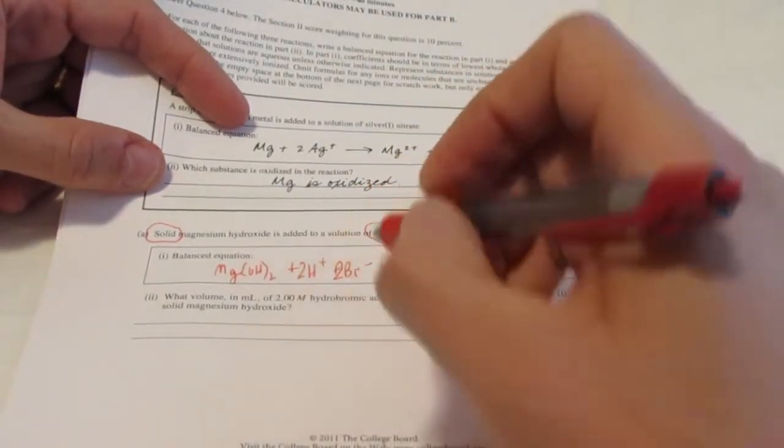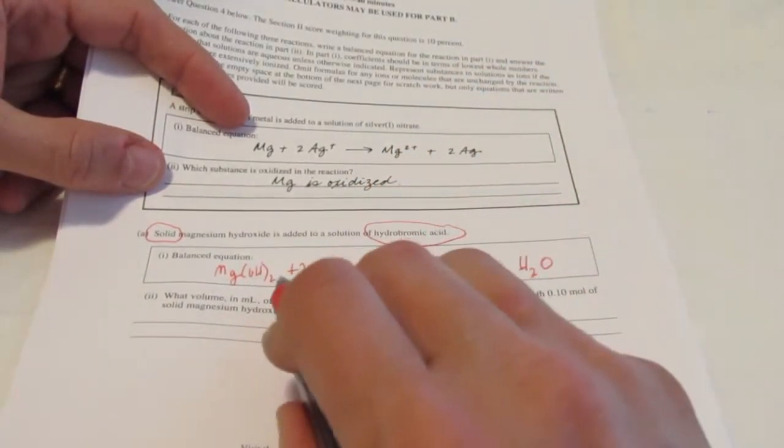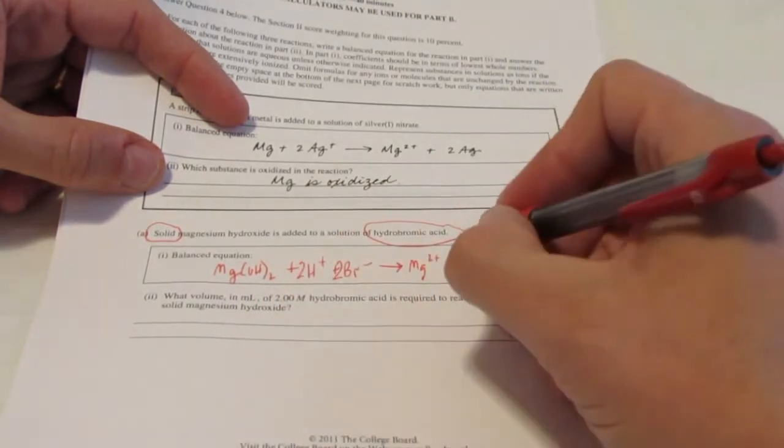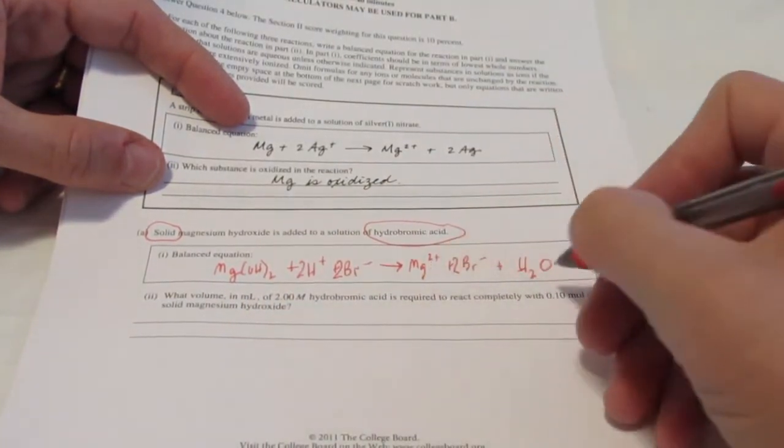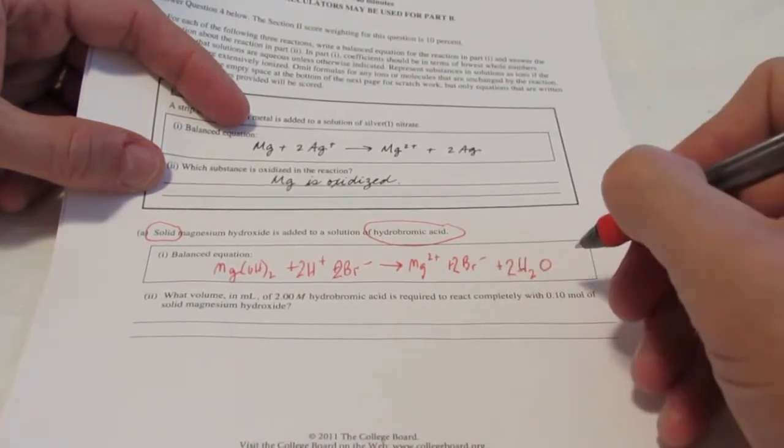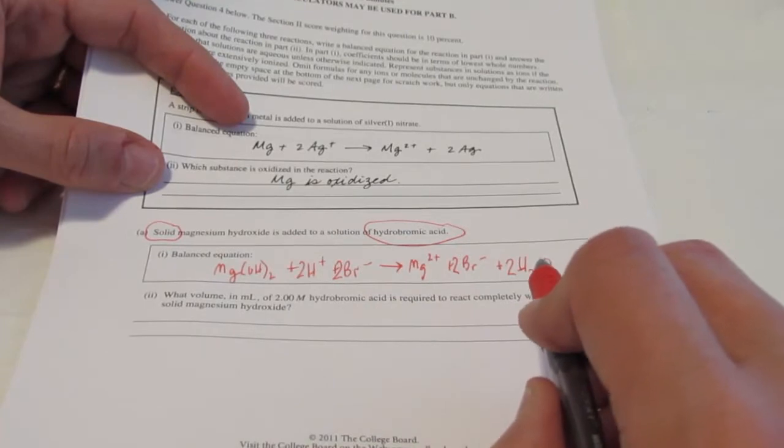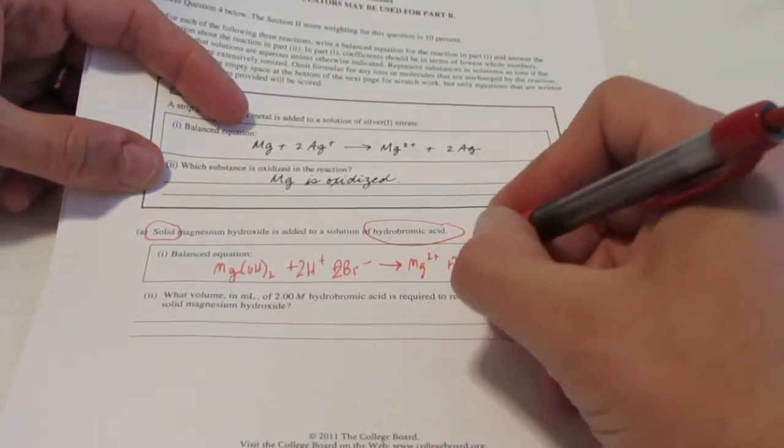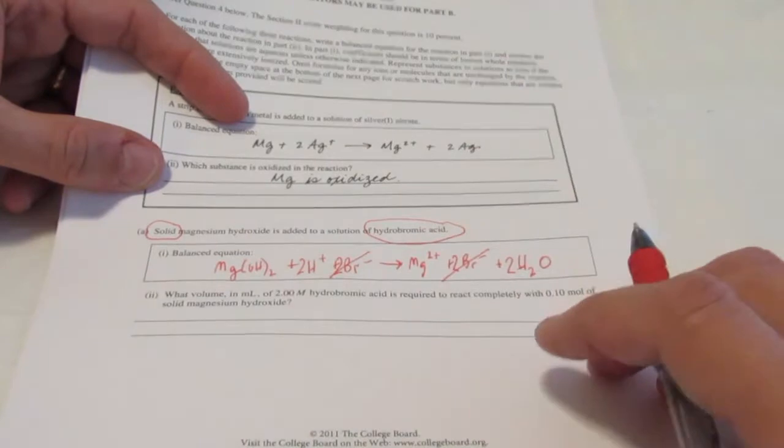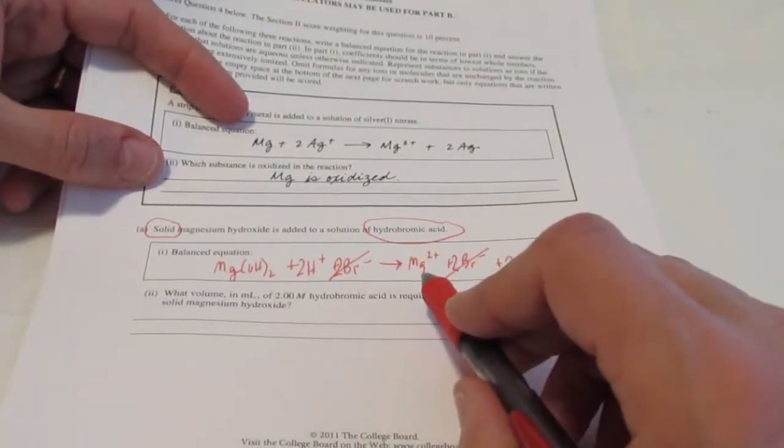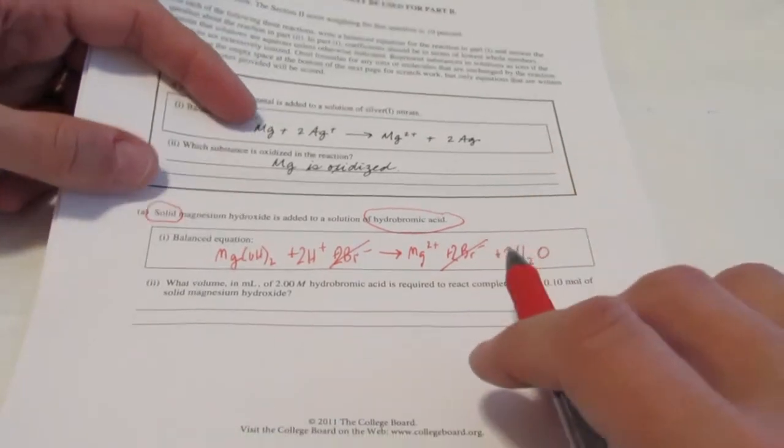I'm going to need two H+ and two Br-. Because once again, I'll have two OH- here. I'll need two HBr's. So on this side, I'll have two Br-. And I'm making two waters. So I believe that's balanced now. So are there any spectators that we can get rid of? Aha. The bromides, they're gone. So Mg(OH)2 and two protons react to form Mg2+ and two waters. Perfect.